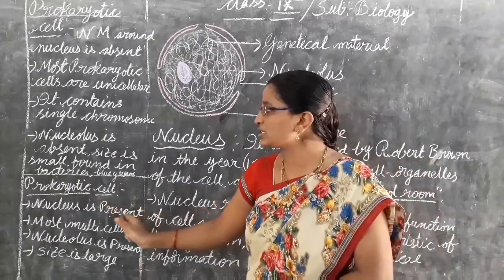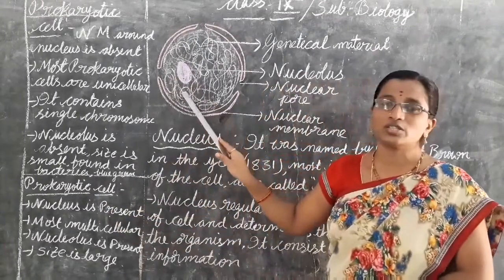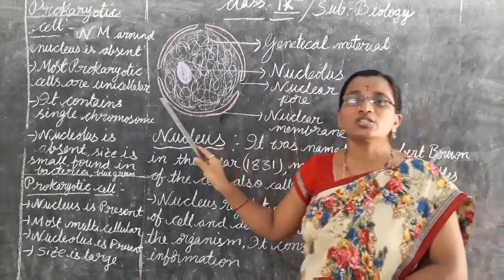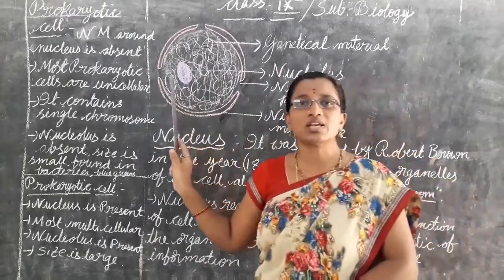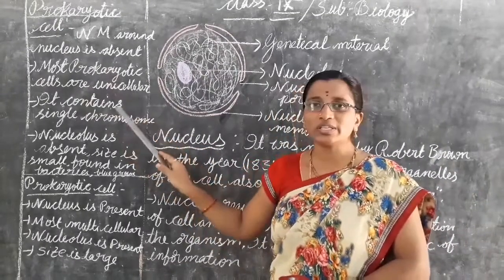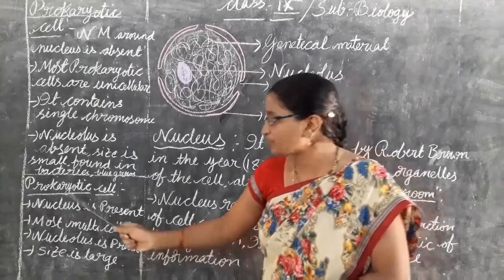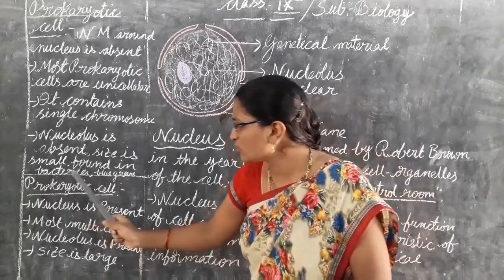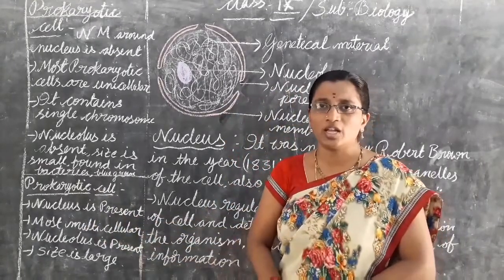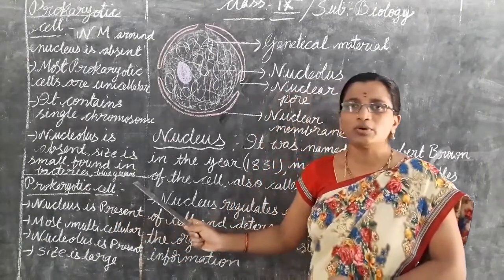The nucleolus is absent in prokaryotic cells. A dot-like structure called a plasmid is present. Prokaryotic cells are smaller in size compared to eukaryotic cells and are mostly found in bacteria and blue-green algae.